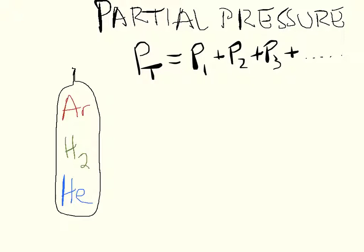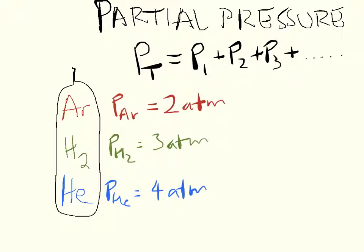So for example, in this tank on the left, we have three gases: argon, hydrogen, and helium. Let's say the partial pressure of argon is 2 atm, the partial pressure of hydrogen is 3 atm, and the partial pressure of helium is 4 atm. I just made these numbers up.